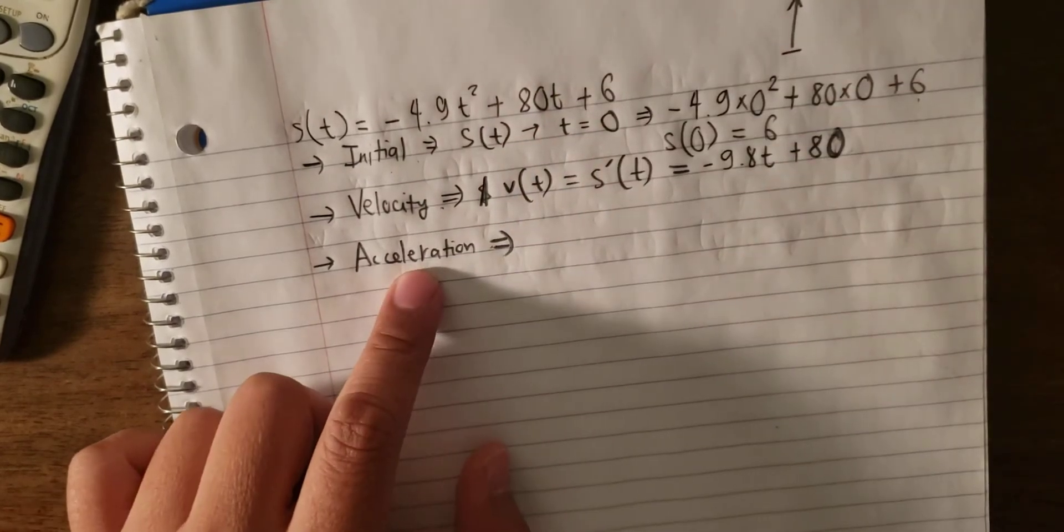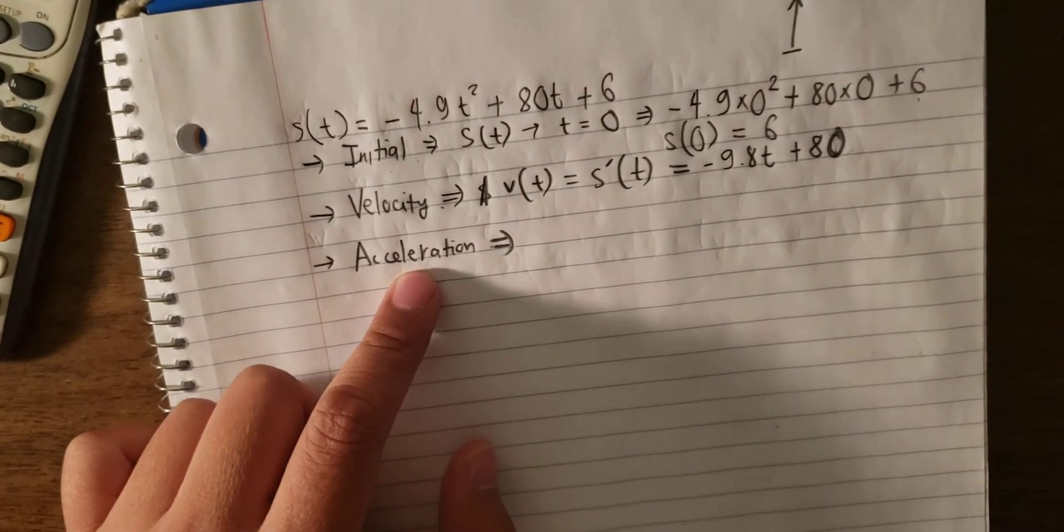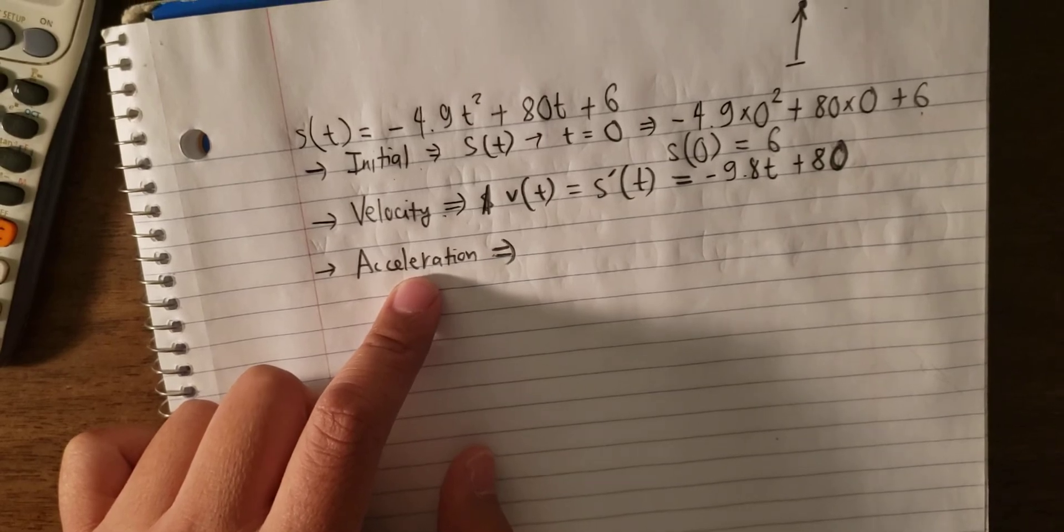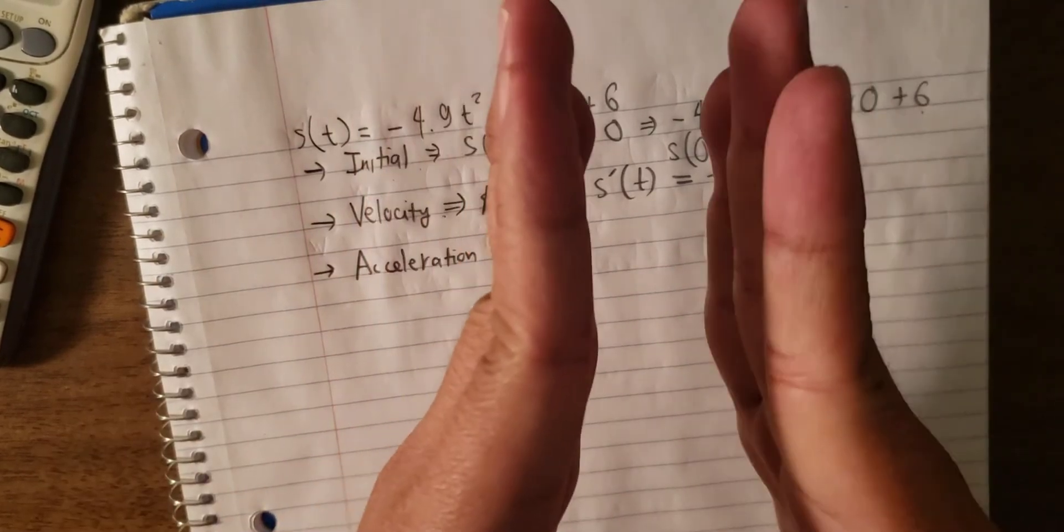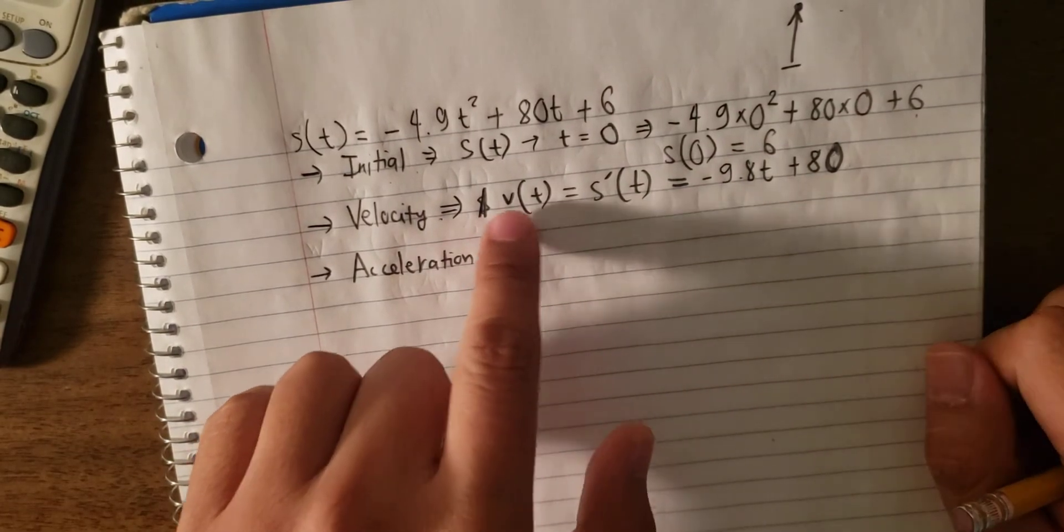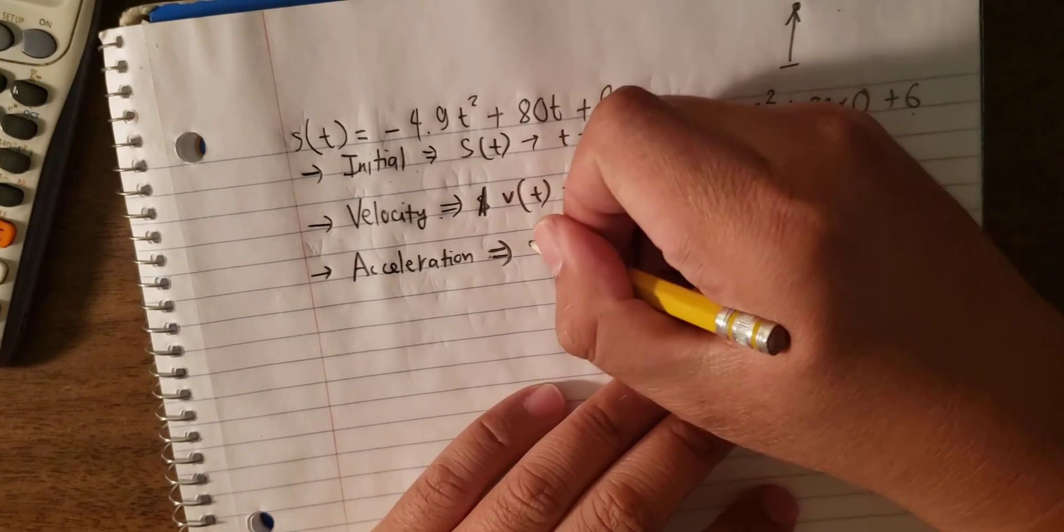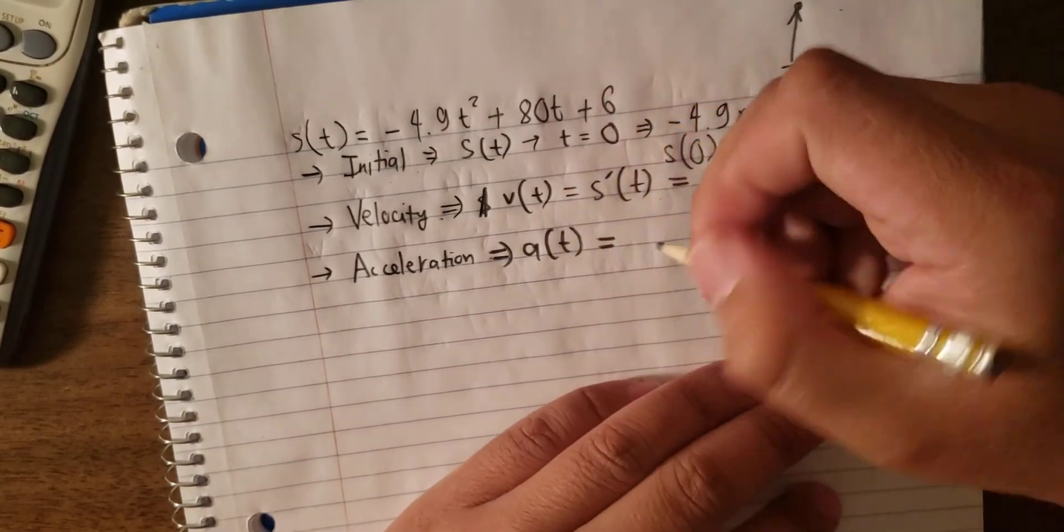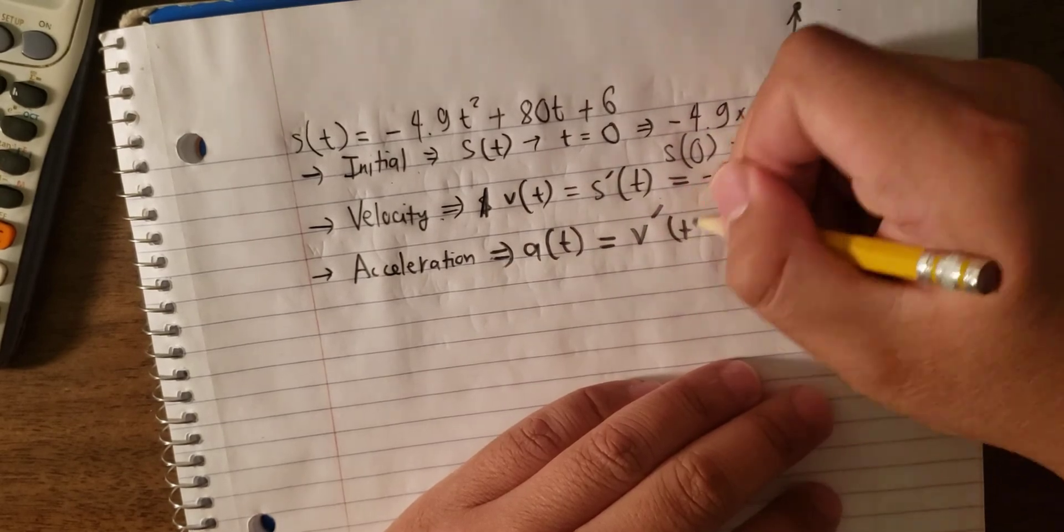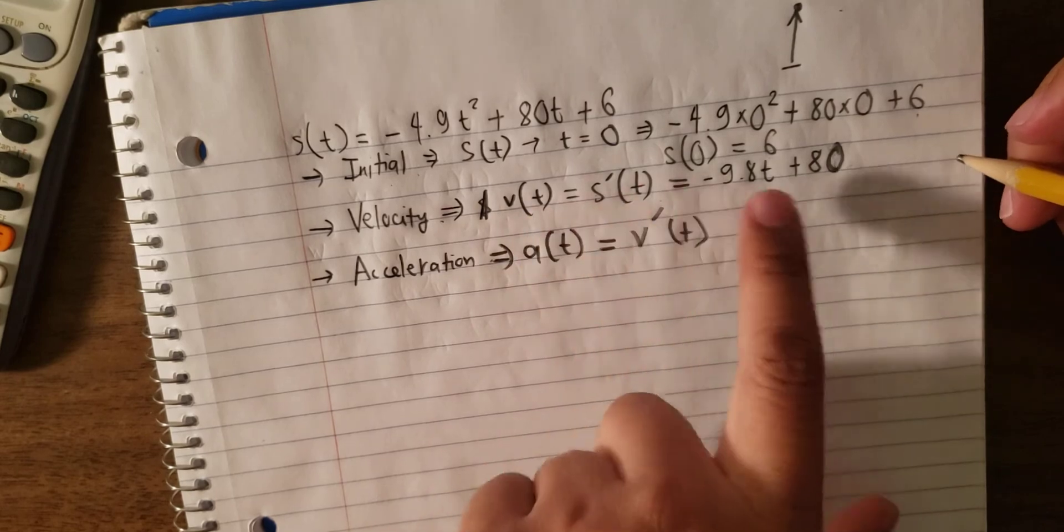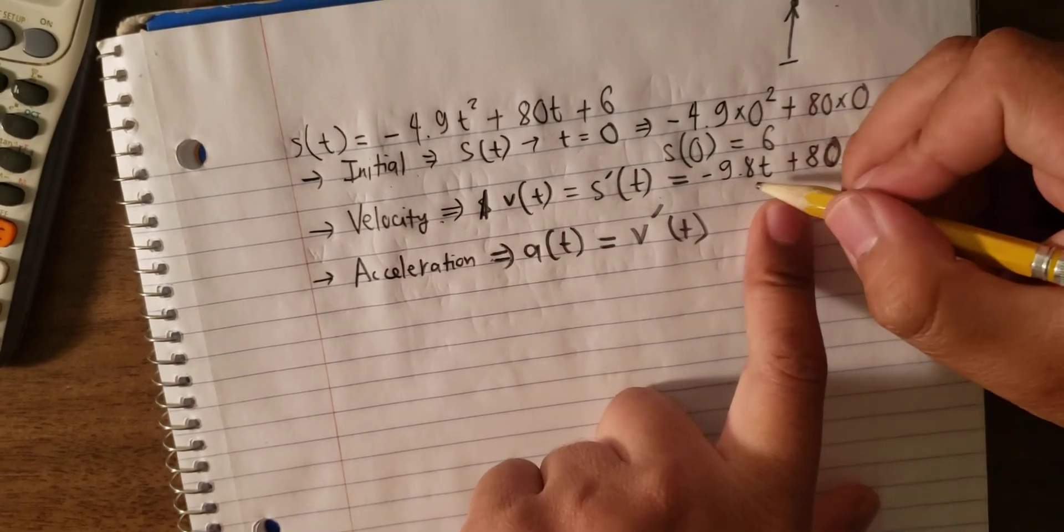Acceleration means the different velocity divided by different time. If the time is too small, it will become the first derivative of the velocity. So we have the function of acceleration equal to the first derivative of v(t).